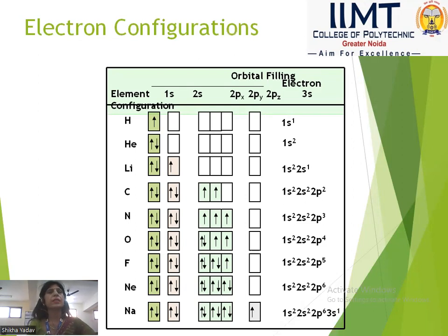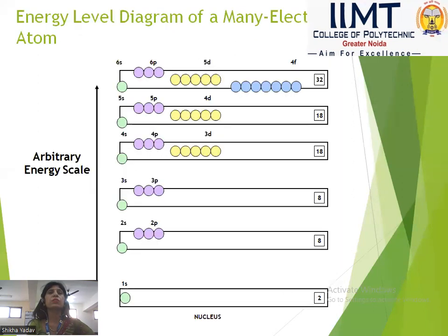Next is neon: 1s², 2s², 2p⁶. Neon has atomic number 10. Sodium has atomic number 11: 1s², 2s², 2p⁶, 3s¹. Here is the energy level diagram of many-electron atoms.